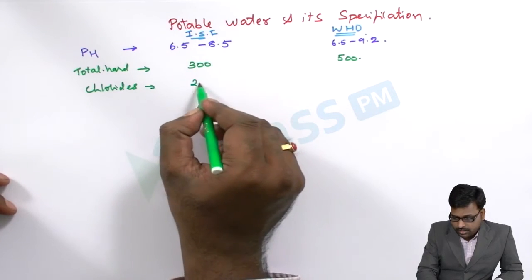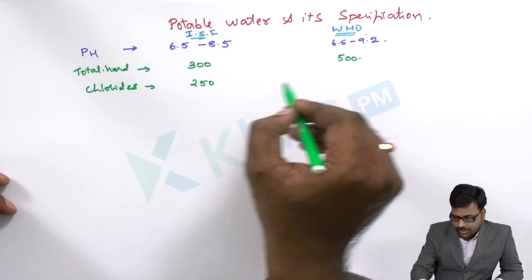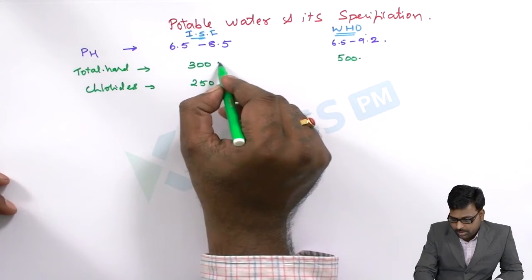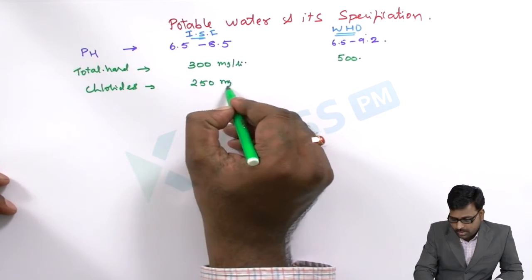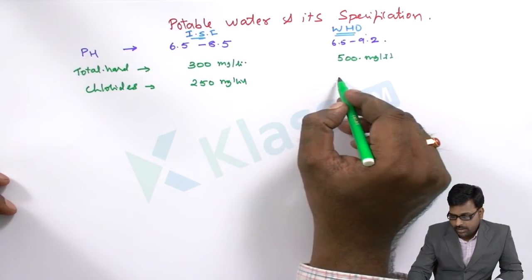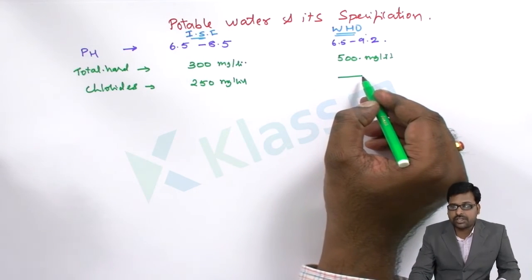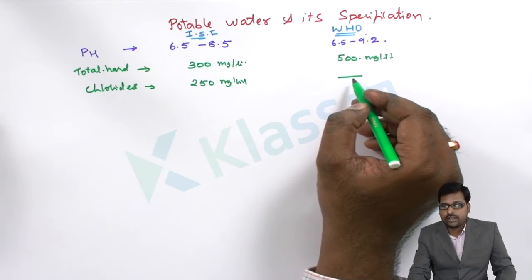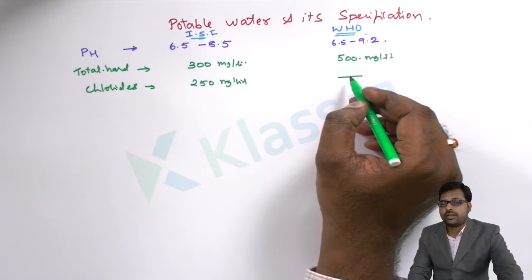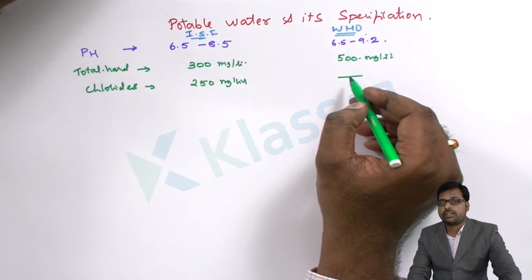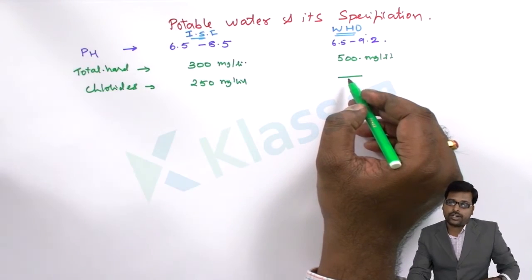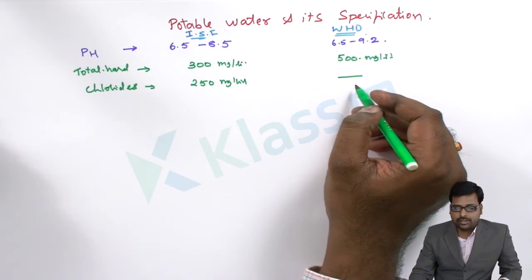And if you see the chlorides, it is 250, it is ppm actually, mg per liter or ppm. And WHO has not given any specifications for the chlorides, that is the chlorides percentage or the chlorides ppm is not mentioned actually.